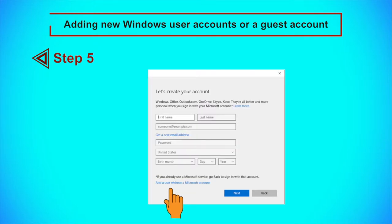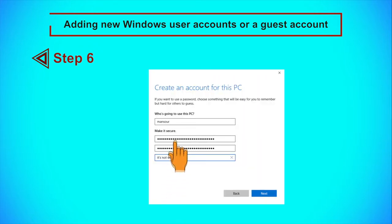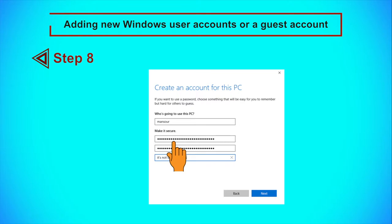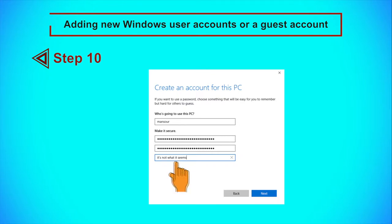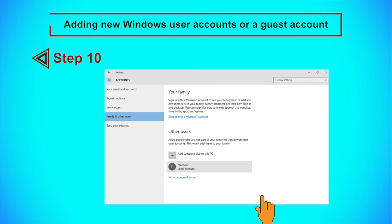Step 5: Click the Add a User Without a Microsoft Account link. Step 6: Type the username for the new account under the Who is going to use this PC section. Step 7: Type the password for the new account under the Make it secure section. Step 8: Retype the password for the new account. Step 9: Type something in the last section which will help you remember the password if you ever forget or lose it. Step 10: Click Next to proceed. You will see the new user account you have just created in the Family and Other Users section.